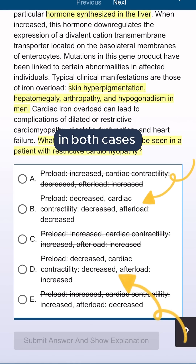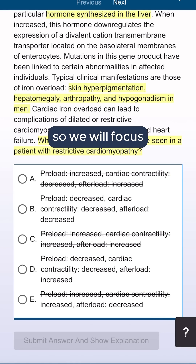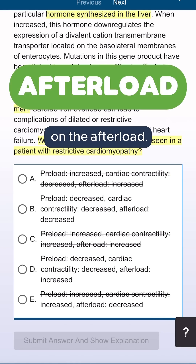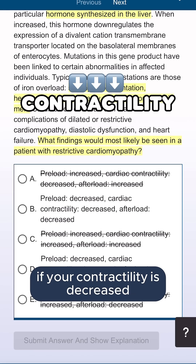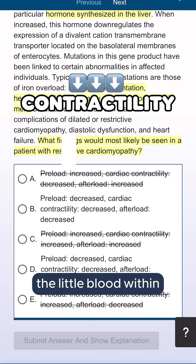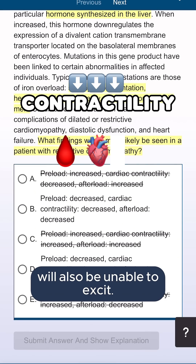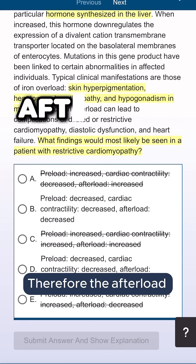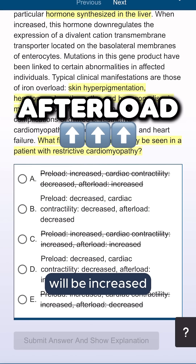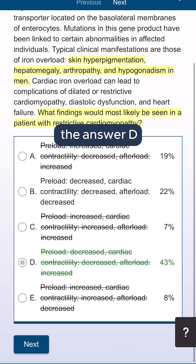In both remaining cases, contractility is decreased, so we will focus on the afterload. Think about this: if your contractility is decreased, this means that the little blood within the heart chambers will also be unable to exit. Therefore, the afterload will be increased. So we will choose answer D.